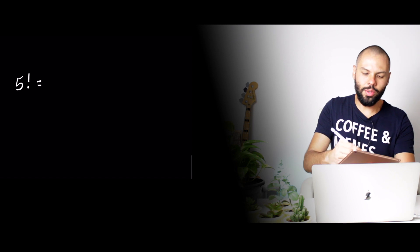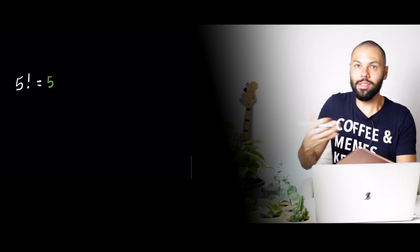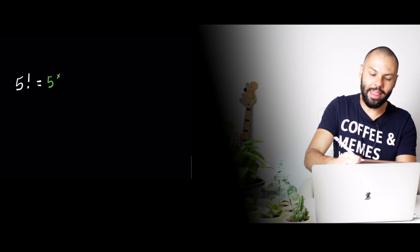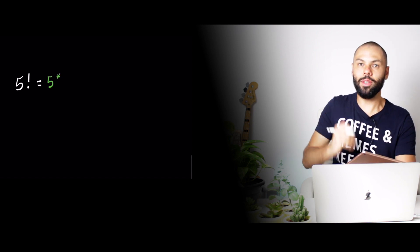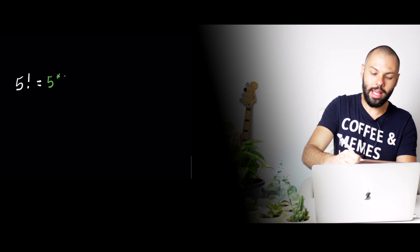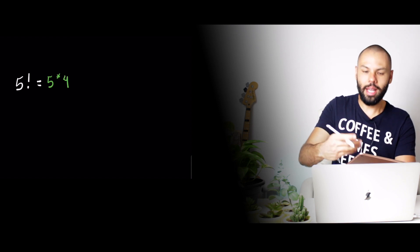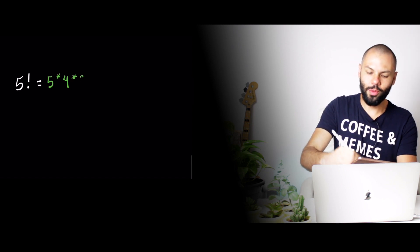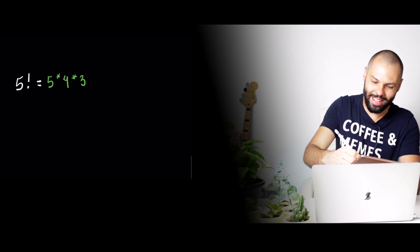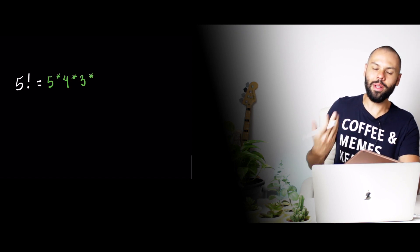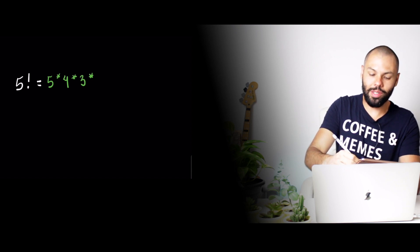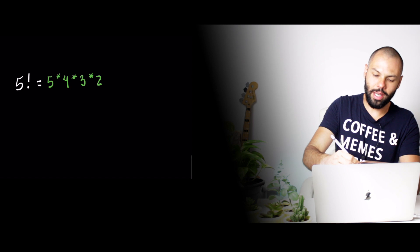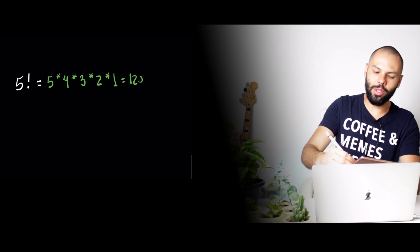How you calculate that is: you get the first number, five, which is the number itself, and then you multiply by five minus one, which is four. Then you multiply four by four minus one, which is three. This is a very simple pattern — three is multiplied by two, which is three minus one. Then two is multiplied by one. That's it — very simple, and you get 120.